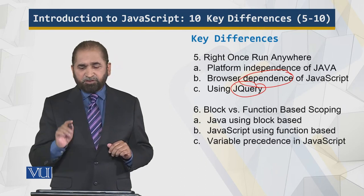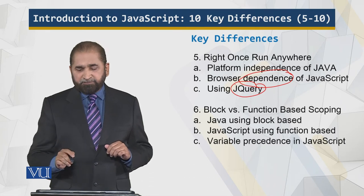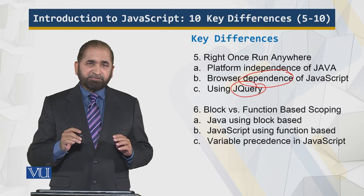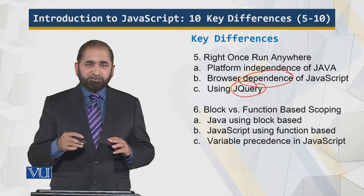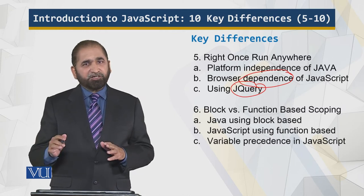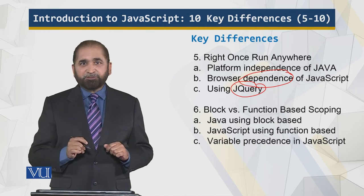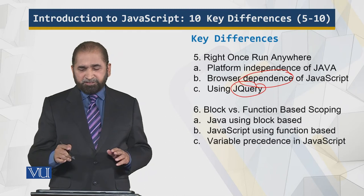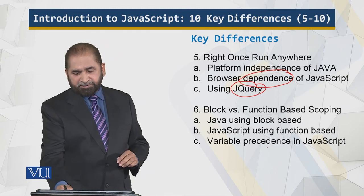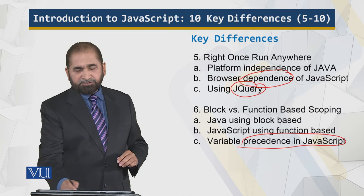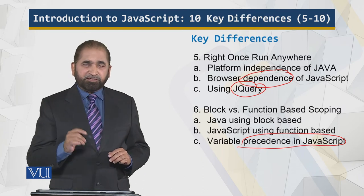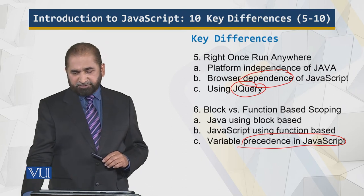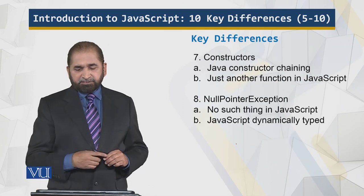Next is block versus function-based scoping. Java uses a block-based approach — as the domain changes, the scope is limited and not accessible outside the domain. That is not the case for JavaScript, because in JavaScript we have local variables and global variables, and there is a precedence of variables in JavaScript which is not the case for Java. So JavaScript offers a certain amount of flexibility in this context.